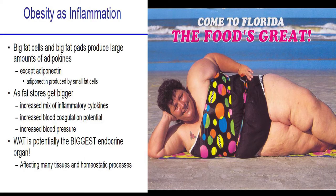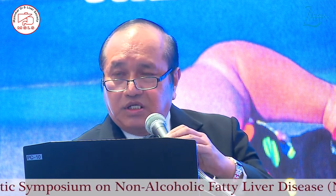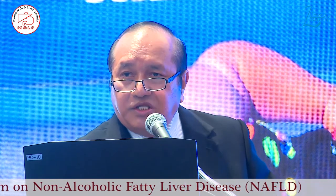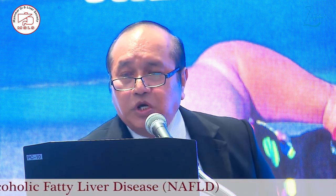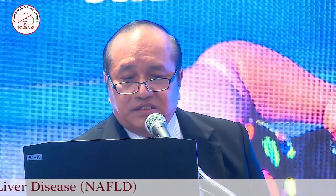Next, I want to say that obesity is inflammation. The adipose tissue has the capacity — they are capable of producing pro-inflammatory cytokines. When the fat stores get bigger, they become hypoxic, and they start producing these pro-inflammatory cytokines. And the white adipose tissue is potentially the biggest endocrine organ in the body.